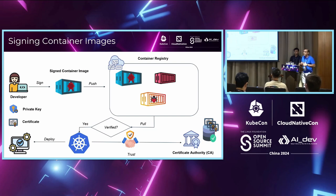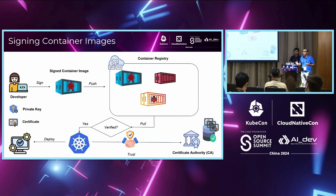We're making sure any tampering with the software can be detected early. For example, you can verify the image and put a policy in place: if the image is unverifiable, don't deploy it. You don't have to do this across the board, but at least for your most critical workloads — maybe in your production environment.